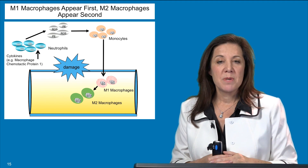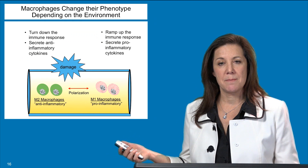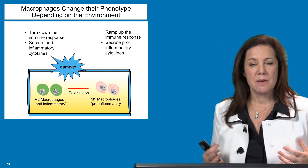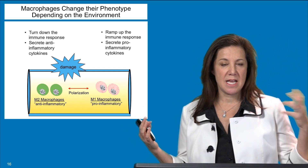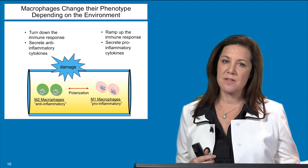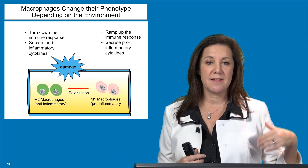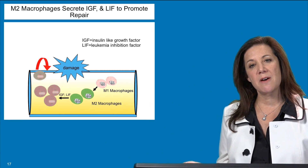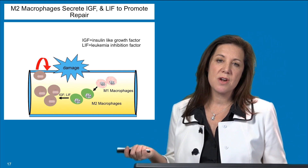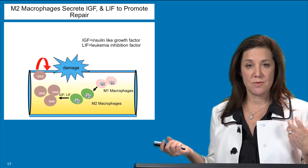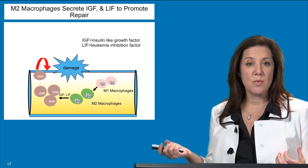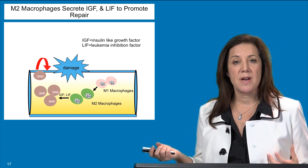M2 macrophages are more of the anti-inflammatory type. Macrophages can change their phenotype depending on the tissue environment; in muscle injury, M1 macrophages always appear first and M2 second. M1s ramp up the immune response by secreting pro-inflammatory cytokines; M2s turn it down by secreting anti-inflammatory cytokines and repair factors. Two repair factors are insulin-like growth factor (IGF) and leukemia inhibitory factor (LIF), both known to act on satellite cells — resident stem cells in the muscle — causing them to proliferate, fuse, and repair the muscle.